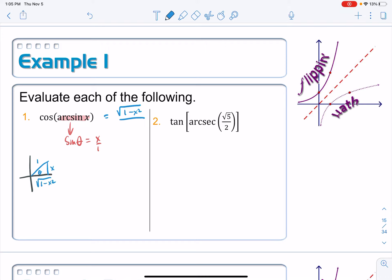over the hypotenuse, which is just 1. Or if you prefer, it's just simply the square root of 1 minus x squared. So we turned that trigonometric expression into an algebraic one.